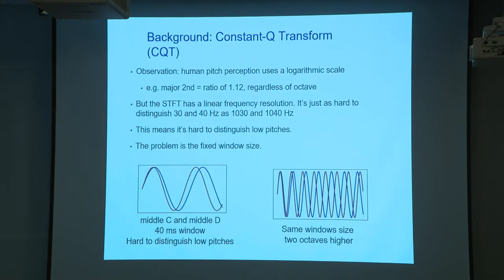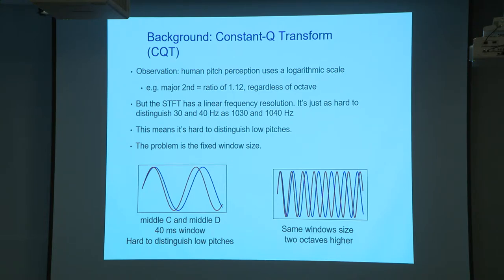We switched to CQT — Constant-Q Transform — because it uses different window sizes for different frequencies. For low-frequency waveforms, a small window makes it very hard to tell the difference between waveforms, whereas for high frequency the same window size creates a huge difference. The window size for different frequencies shouldn't be the same. CQT is designed for exactly that, and it works well for audio signals and music.